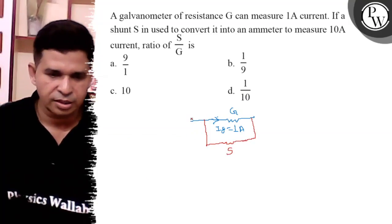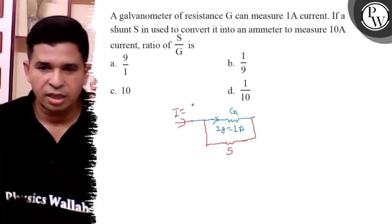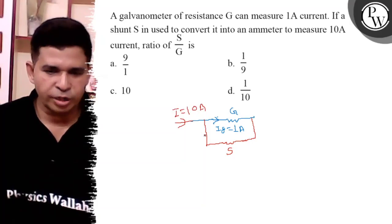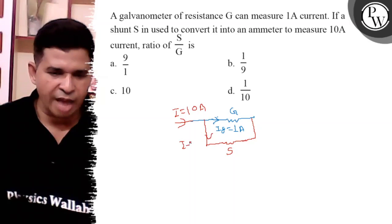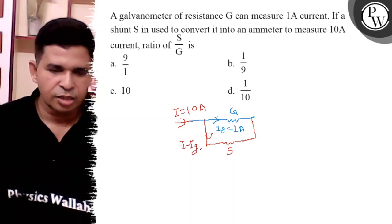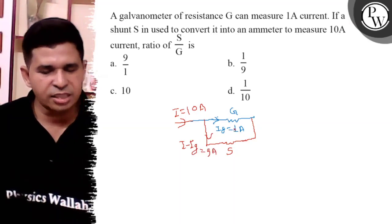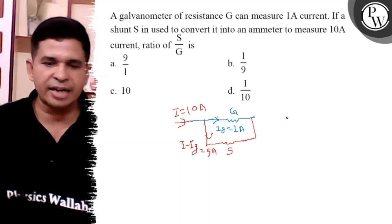So current range is I, I is nothing but 10 ampere. So here the current flowing is I minus IG, so it is 9 ampere because I is 10, IG is 1, so remaining current is that.